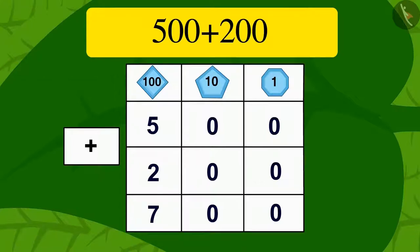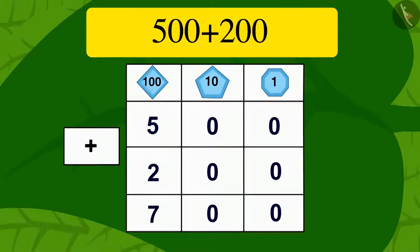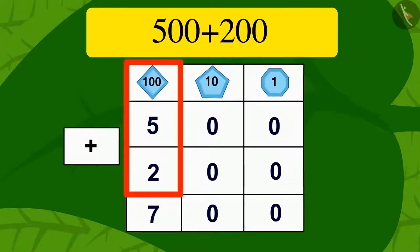Children, remember, if any two 3-digit numbers are to be added, we have only 0 in the place of 10 and 1. We can quickly find the solution to that addition by adding two numbers written in the hundreds place and adding two zeros behind it.